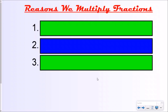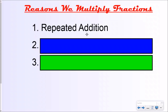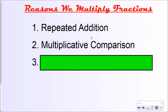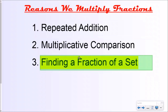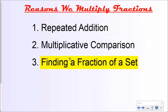There are three different reasons that we multiply, whether it's fractions or whole numbers. The first one is repeated addition — if we're doing three plus three plus three, that's really four groups of three, or two-thirds plus two-thirds is two groups of two-thirds. The second reason is multiplicative comparison, where the times sign says 'times as many as' or 'times as much as' — it's comparing two things using multiplication. Number three, the one we focus on today, is finding a fraction of a set or a group, and this is specific to fractions.